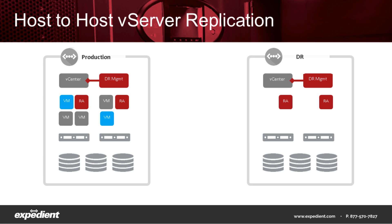Lastly, of course, we need some form of network communication between production and disaster recovery sites. It is possible to make use of point-to-point circuits for this connectivity. However, most Expedient customers use public internet and site-to-site tunnels. This provides a reliable, cost-effective, and secure solution. Additionally, once the initial seeding of the environment has taken place, the replication of virtual machine change data over the network doesn't require a large amount of bandwidth. In many cases, Expedient's host-to-host replication customers can utilize their existing internet bandwidth for replication tasks.